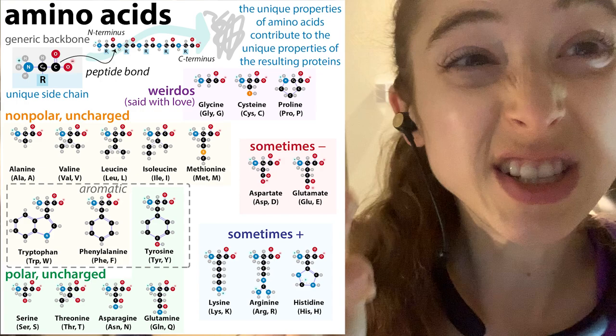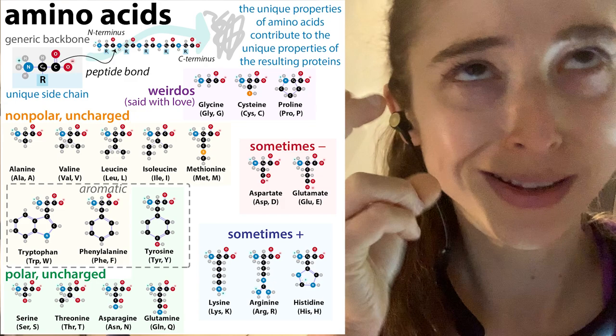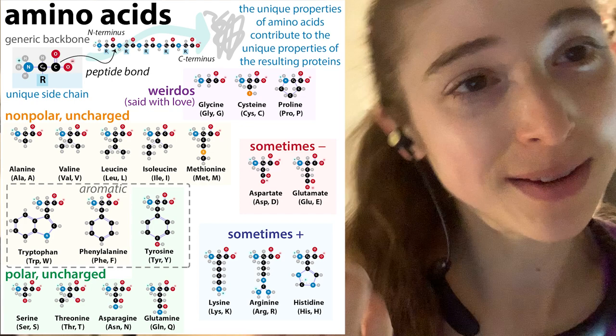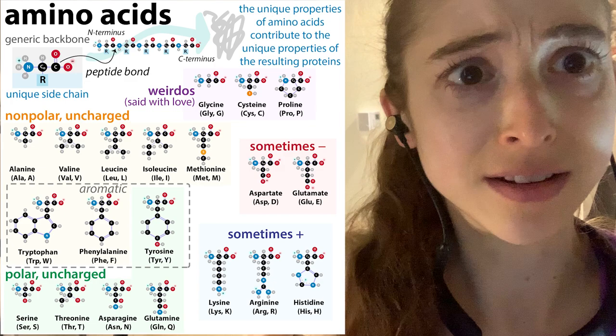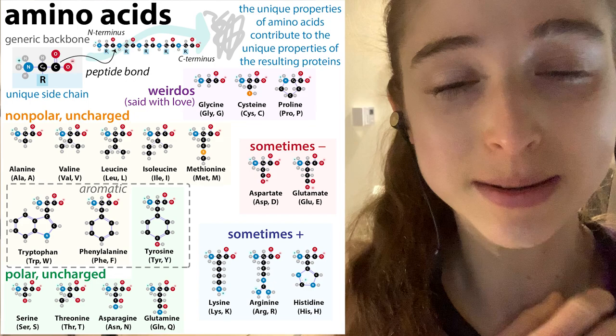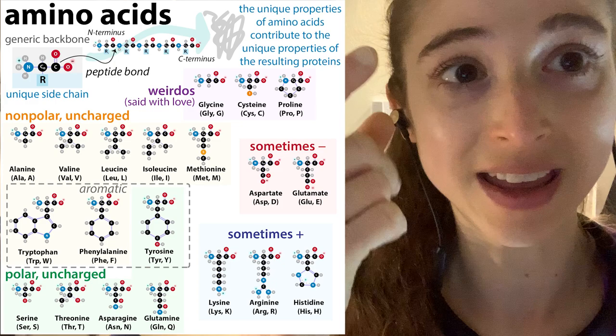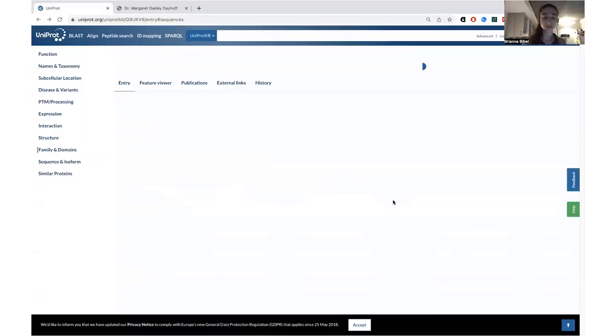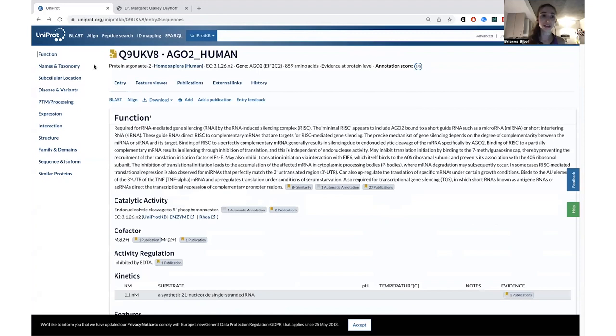I'm not advocating memorizing things just for the sake of memorizing them, but when it comes to amino acids, there are some things you should really know. This starts with the three-letter amino acid nickname as well as the one-letter initial. For alanine, this would be ALA and A. But then you get to things like glutamine where you're looking at GLN and Q. So let's talk about how we can help remember these amino acids and why it's important to know these codes and some basic properties.